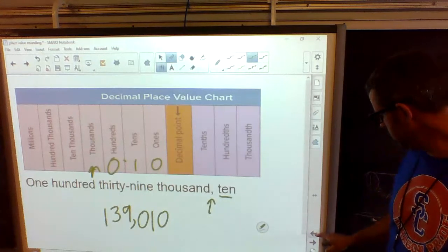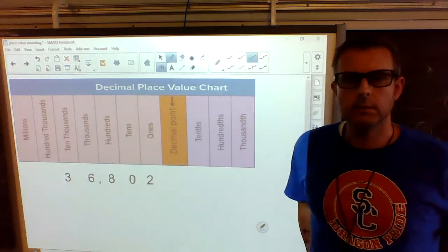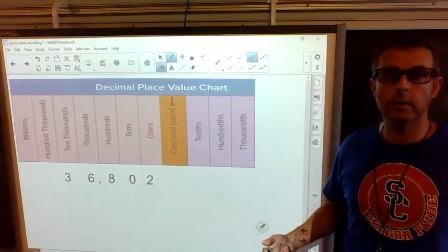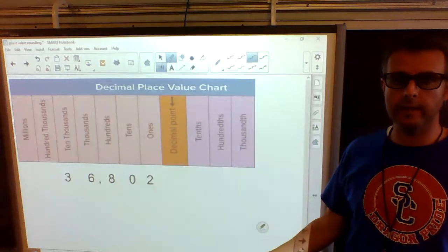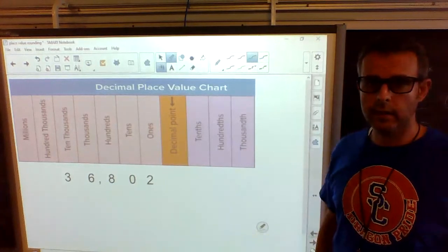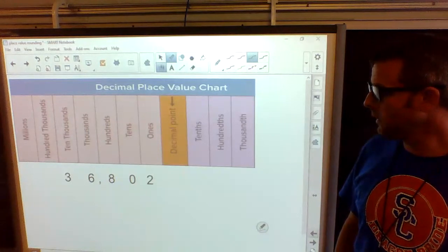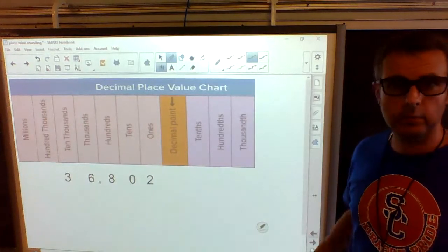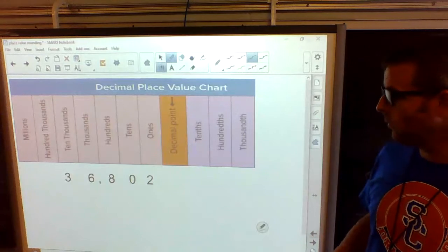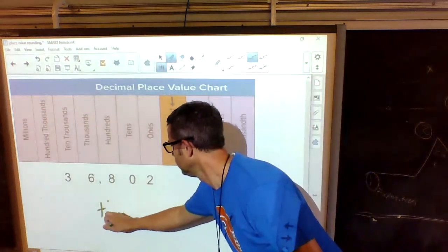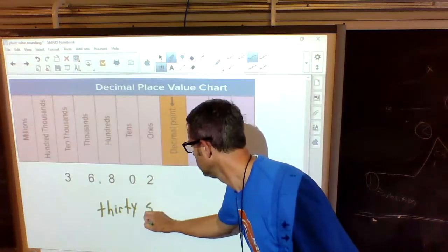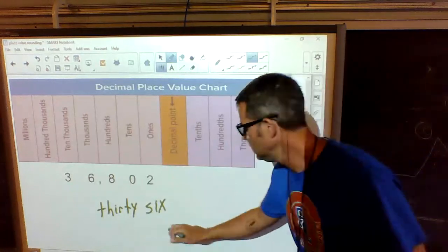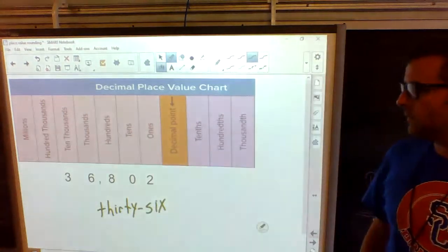Last one for today. Oh, they gave us a number. Three, six, comma, eight, zero, two. We have to turn this into words. How do we do it? We say it, and we write what we say. So somebody, real quick, yell it at me. I heard somebody say it. Thirty-six thousand, eight hundred two. That's what we write. We say it, we write it. So we're going to write thirty-six. Check it out. There's two numbers squeezed together. What do we have to put in there? The dash. Thirty-six. Thirty-six what? Thousand. We have to write thousand.